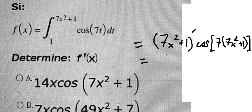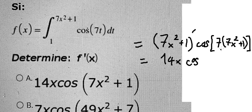So we got 14x cosine 7 multiplied with 7x² + 1.